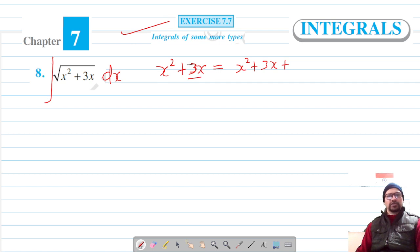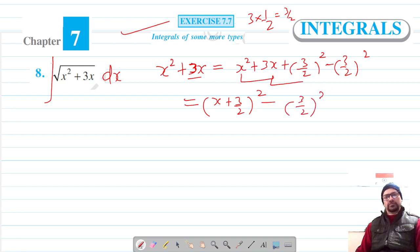The half square of the half of the coefficient of x, that is 3, its half is 3 by 2. So I'm going to add and subtract the square of 3 by 2, which makes up these three terms. This is a plus b the whole square minus this is 3 by 2 the whole square.